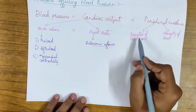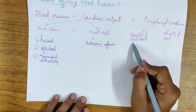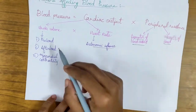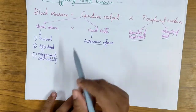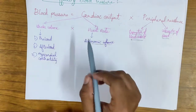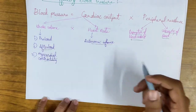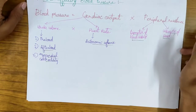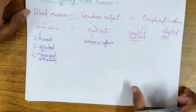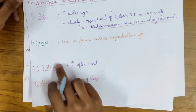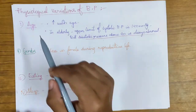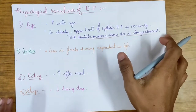Peripheral resistance depends on the diameter of the blood vessel and the viscosity of the blood. If a question is asked about factors affecting blood pressure, you can write this flowchart and explain each factor one by one.